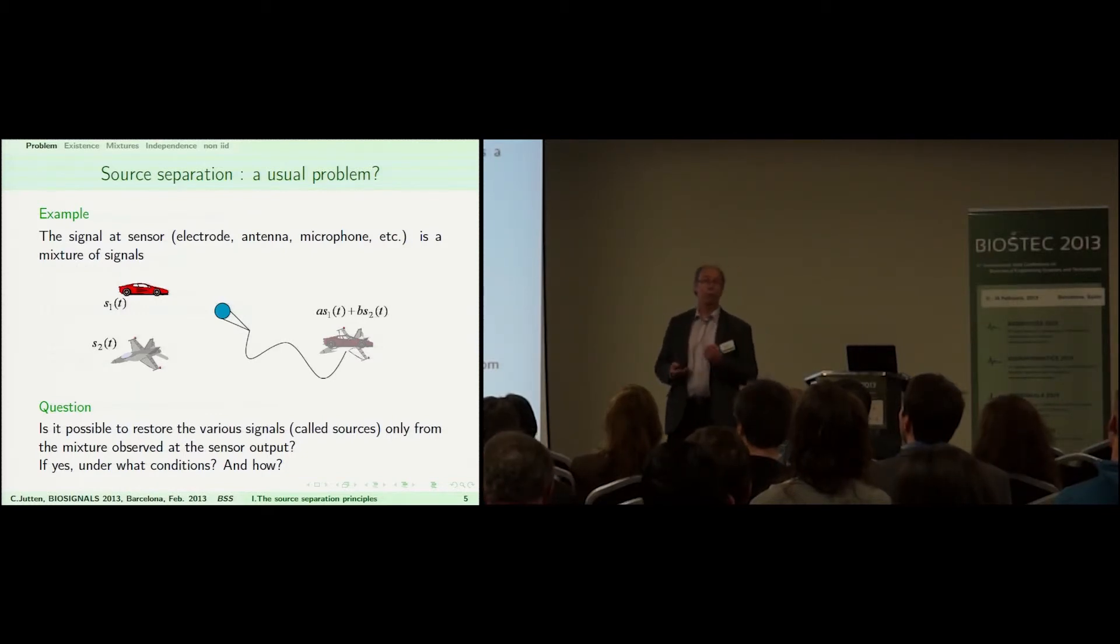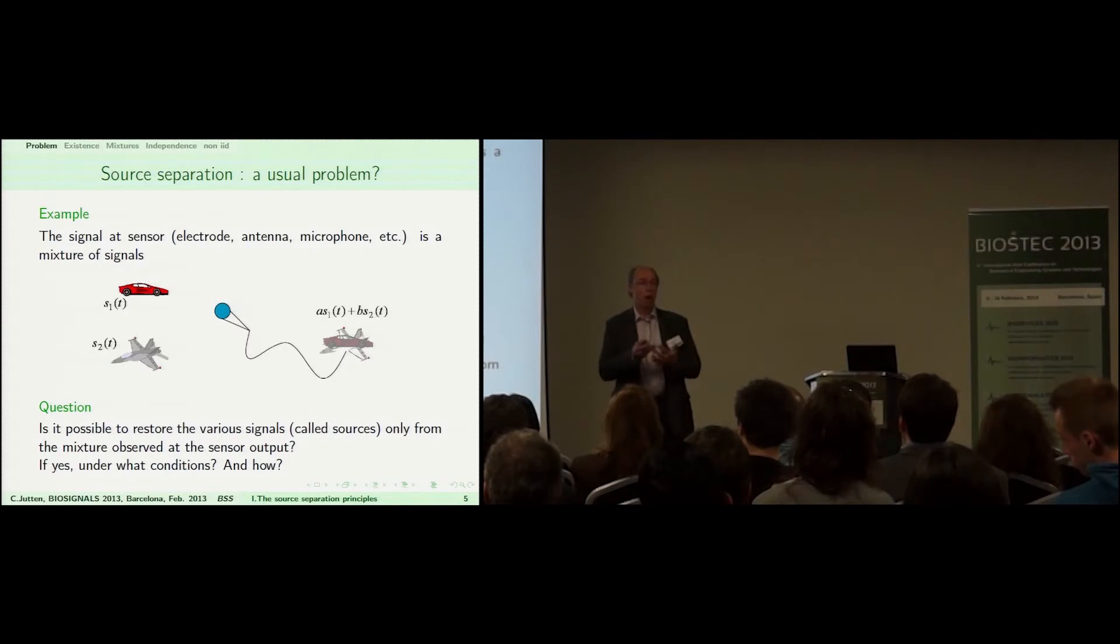One first step in signal processing is trying to extract the signal of interest and remove the noise. When the signal and the noise are very close, very similar, it's difficult to do that.